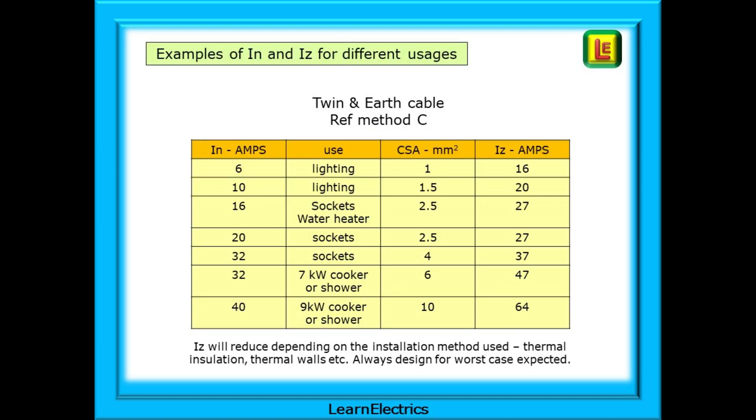This table shows some examples of IN and IZ for different usages. It is by no means a complete list, just an example to help with the video. This table is based on reference method C, or clipped direct, the simplest of the different installation conditions. As we start to pass the cable under loft insulation, through thermal walls, running it in trunking, etc., the rating of the conductors will reduce. The current carrying capacity of the cable will be reduced, and we may have to consider a larger CSA to cater for the same current. The appliance load will stay the same. It is the maximum current that we can put through the conductors that has reduced.